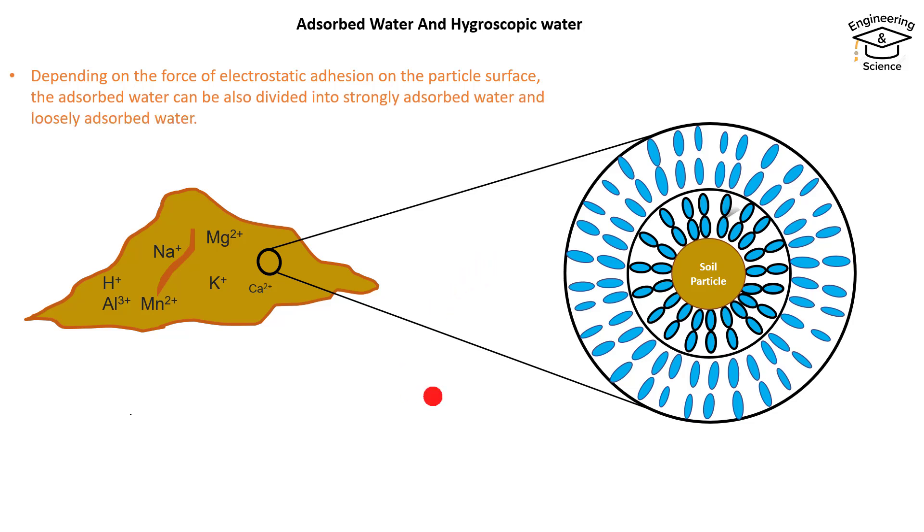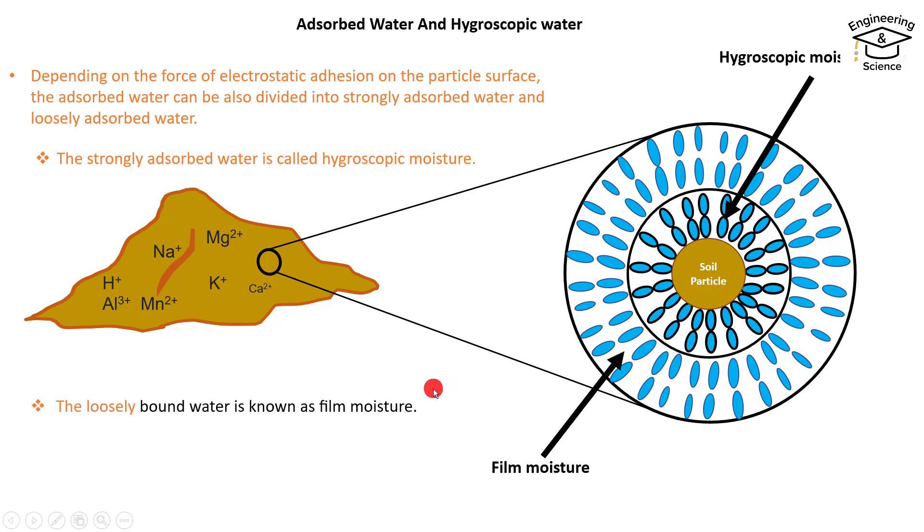What is the strongly adsorbed water? The strongly adsorbed water is called hygroscopic moisture, meaning the first layer around the soil particle. And the loosely adsorbed water is known as film moisture, the second layer. Let's define the properties of these two layers. First, hygroscopic moisture film properties.